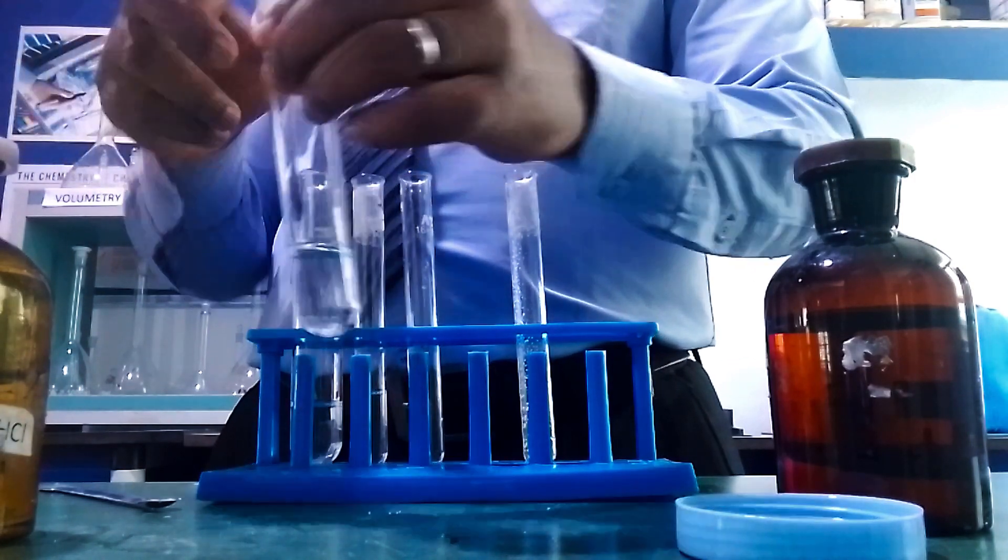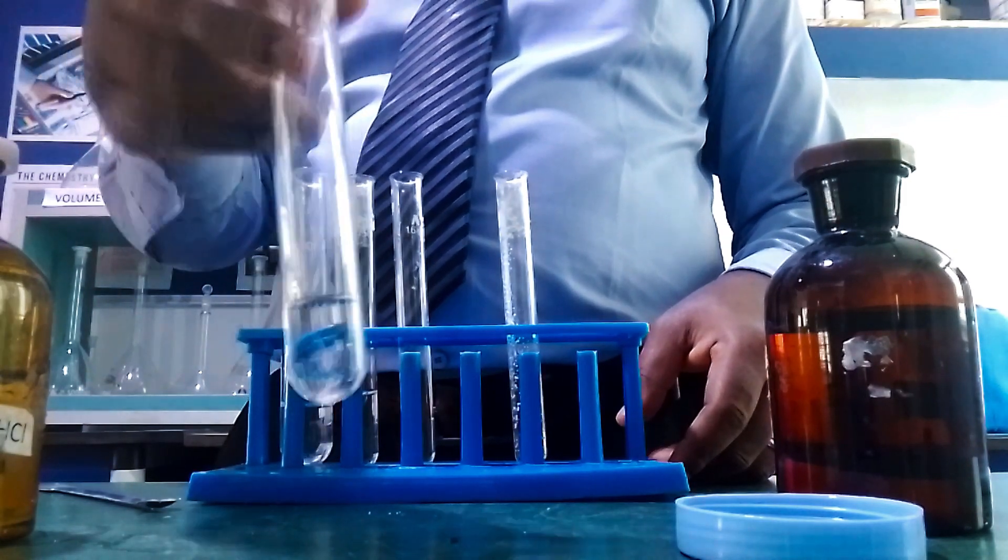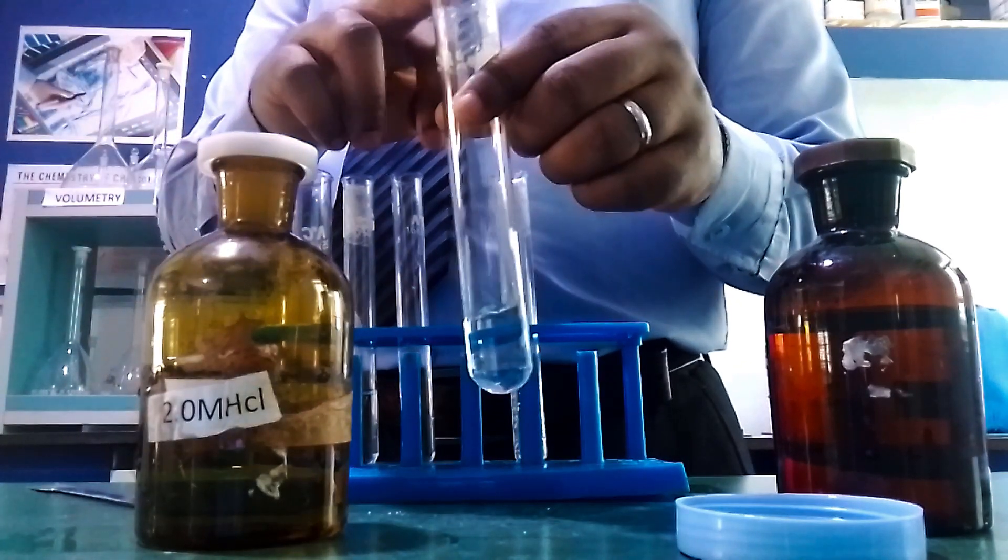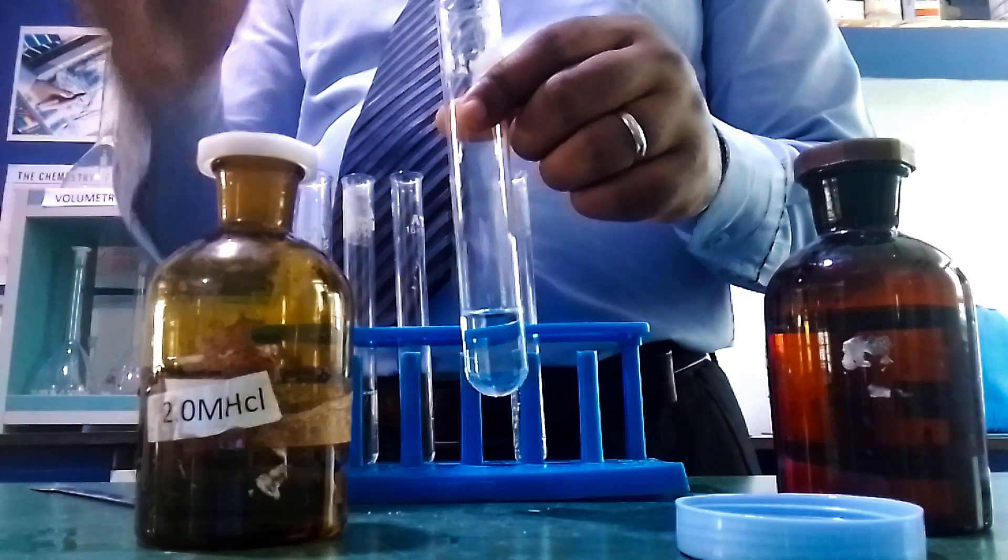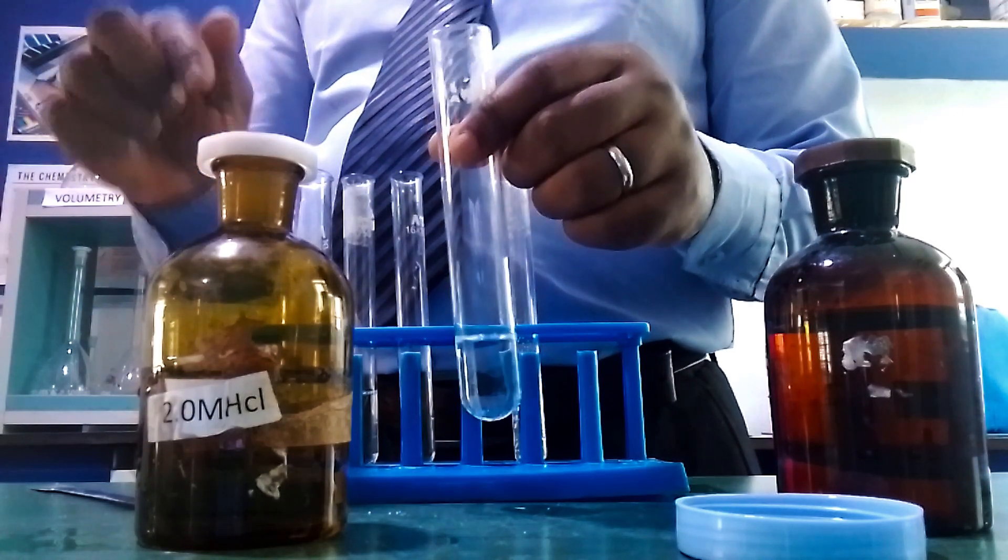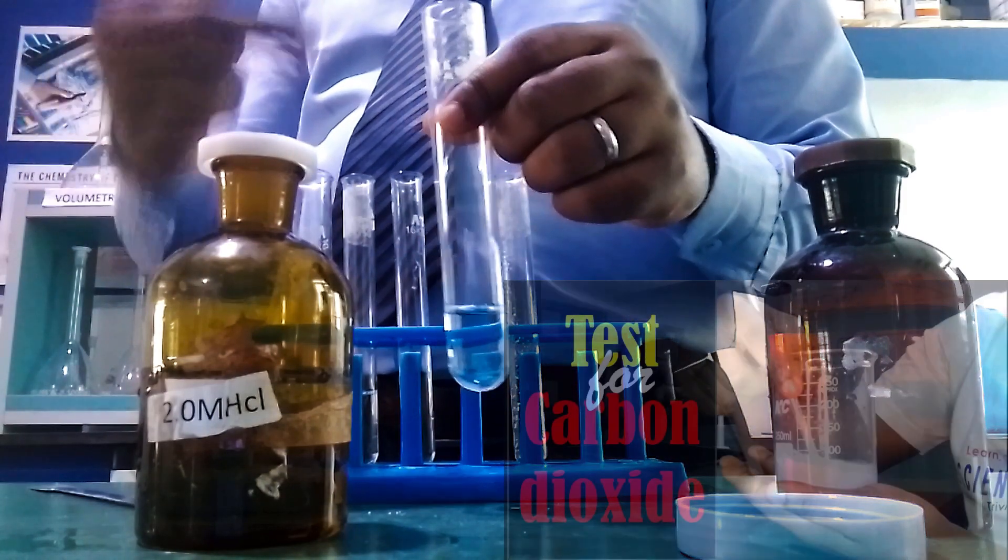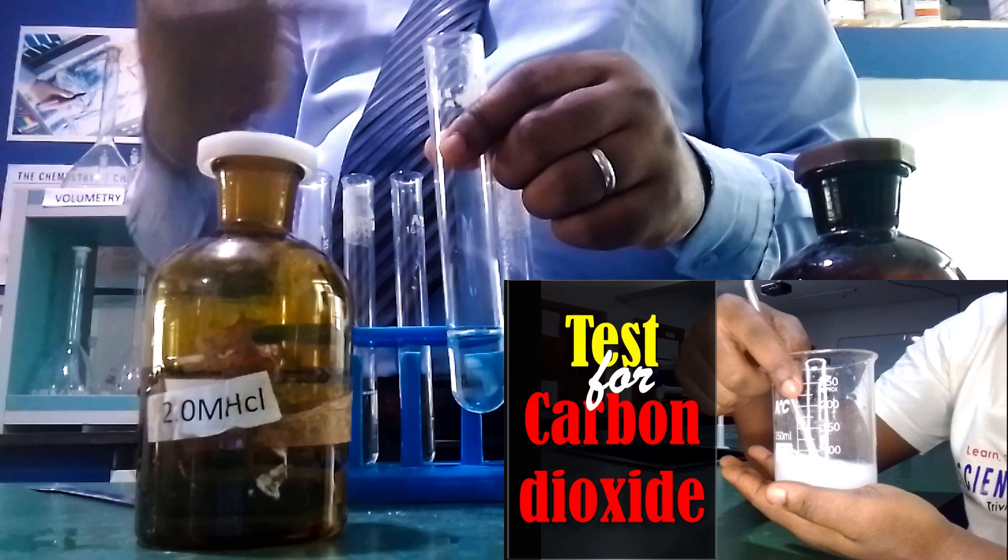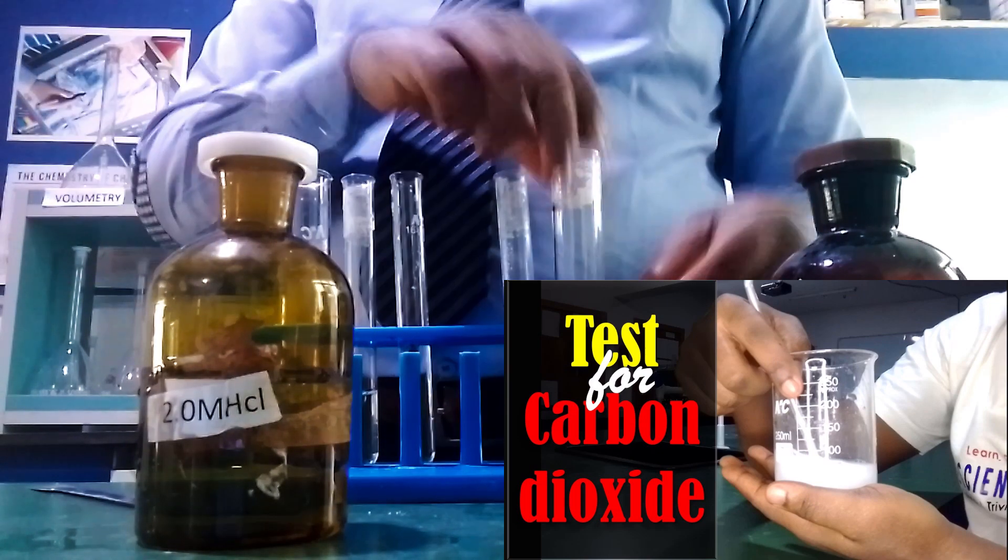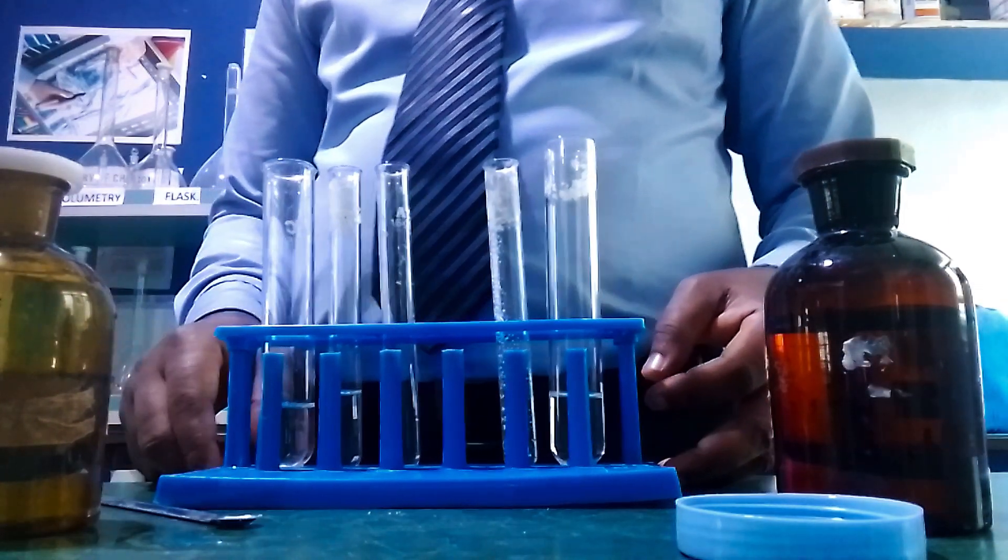The CO₂ gas given off when hydrochloric acid is added to the salt will turn moist blue litmus paper red and also turn lime water milky. In our two previous videos, we showed you how to test for carbon dioxide using your breath and lime water. You'll see that milkiness. If you haven't watched that video, check the link in the description.